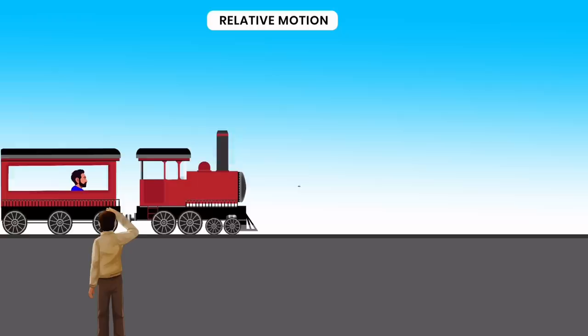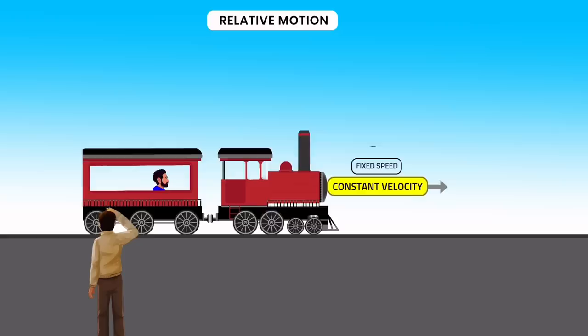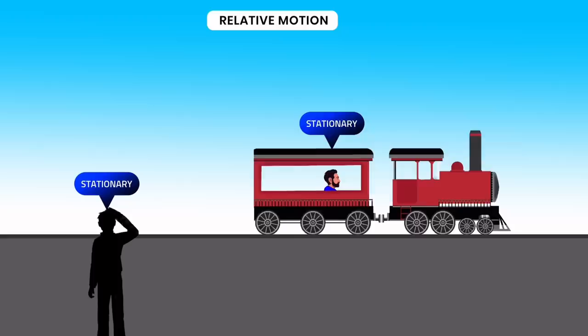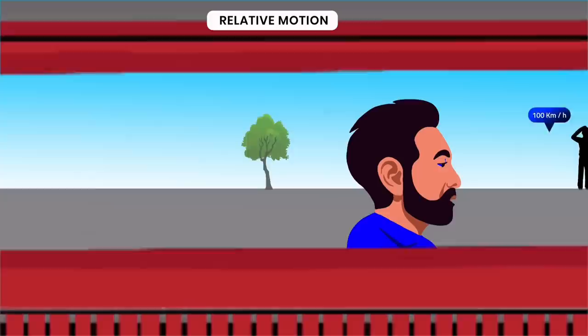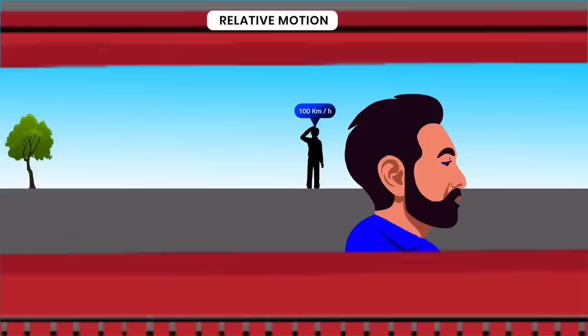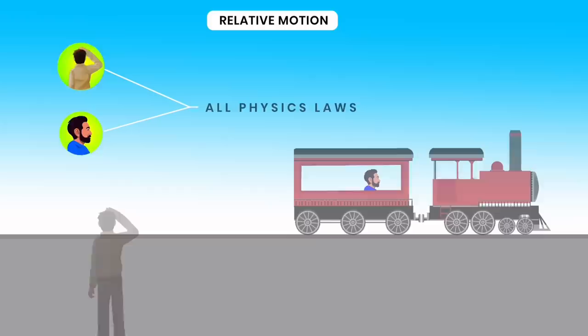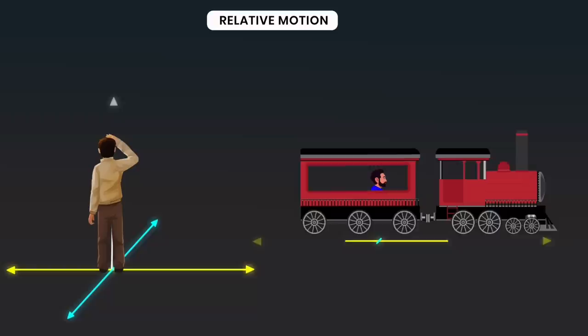What about relative motion? You are standing stationary and your friend is in a train traveling at constant velocity — no acceleration, deceleration, or change in direction, simply a straight path at constant speed. From your perspective, you are stationary and your friend moves away at 100 kilometers per hour. From your friend's perspective, he is at rest and you are moving away at 100 kilometers per hour. When in constant motion, he can't feel any motion. This is called relative motion — all laws of physics are valid for both frames of reference.